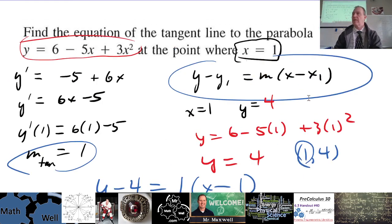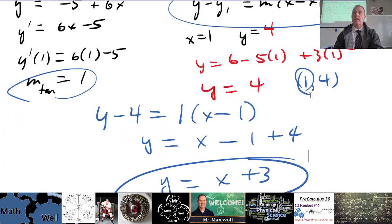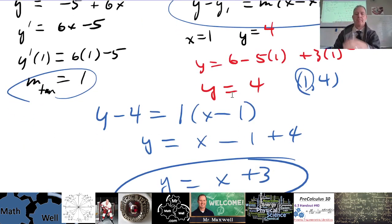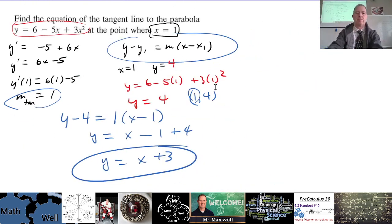But anyways, does that help? And maybe we should check that. Just m tan for the tangent line, so slope of the tangent line. We should check that.